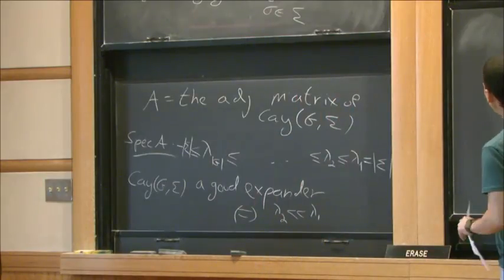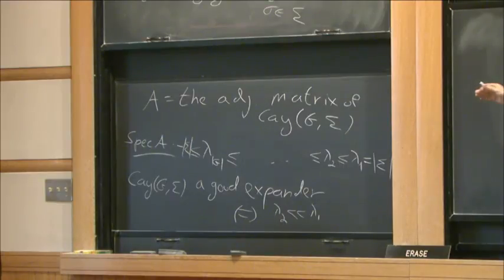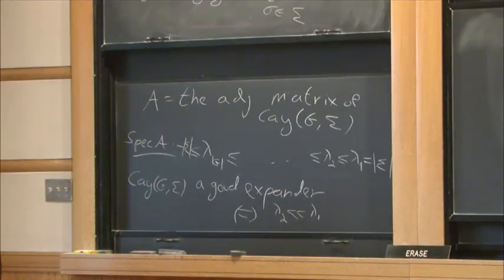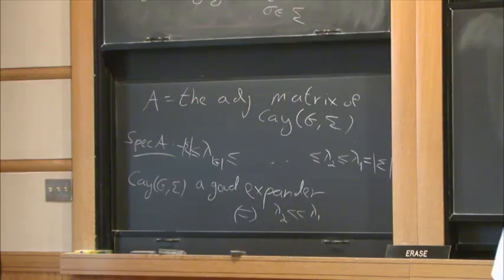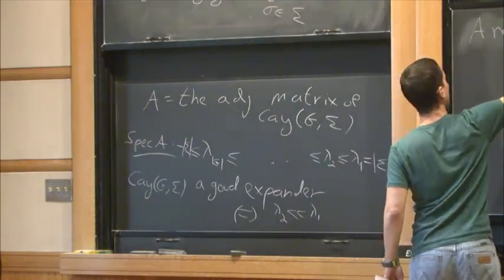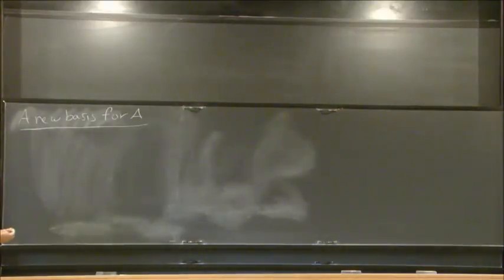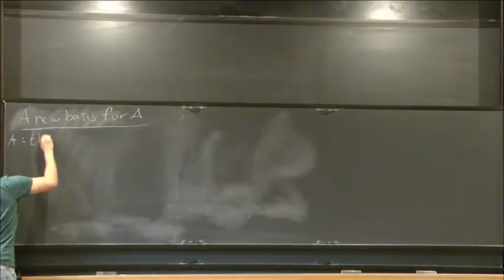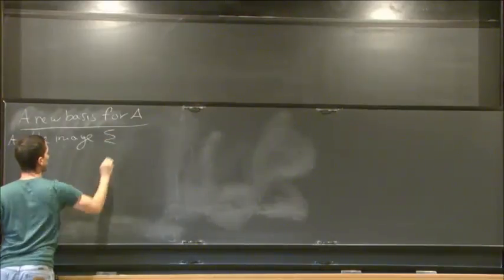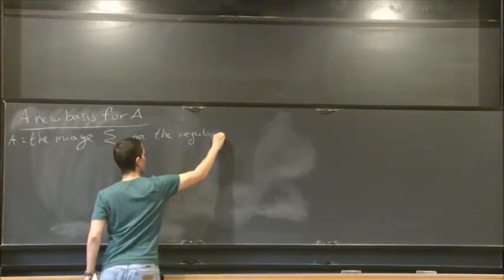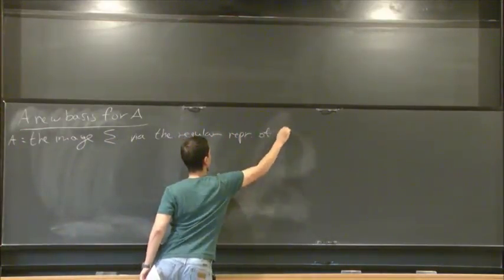And so now I want to change, A is usually given in the regular basis, where the basis are just the group elements. So we have the group elements by the group elements, but now I want to change basis. So a new basis for A. So first we should notice that A, as given here, is just the image of the regular representation of G. So it's the image of the set of generators sigma via the regular representation of G.